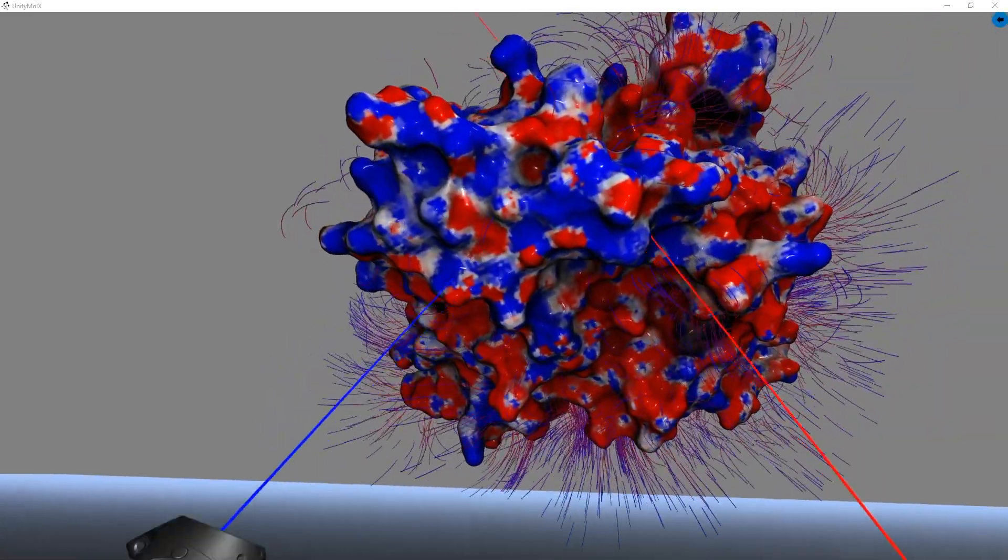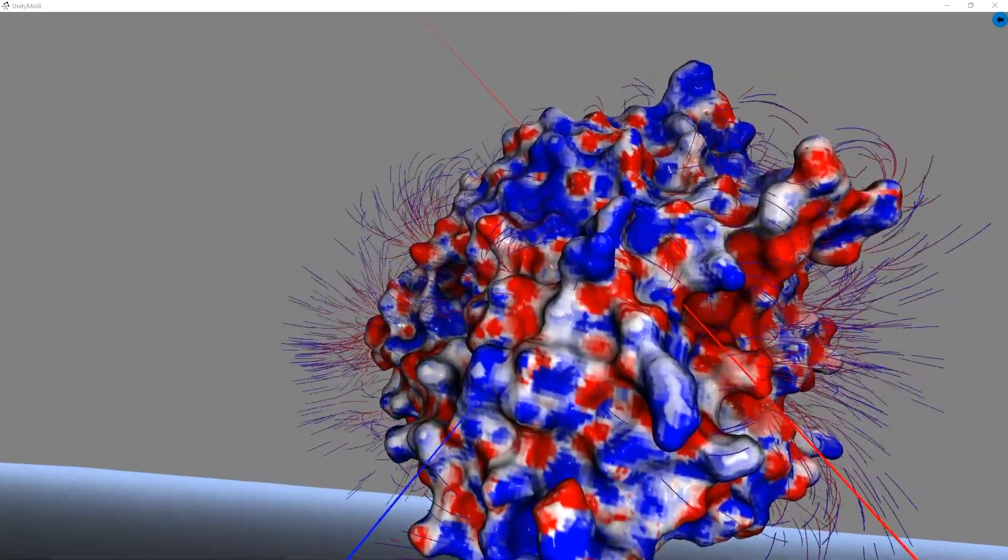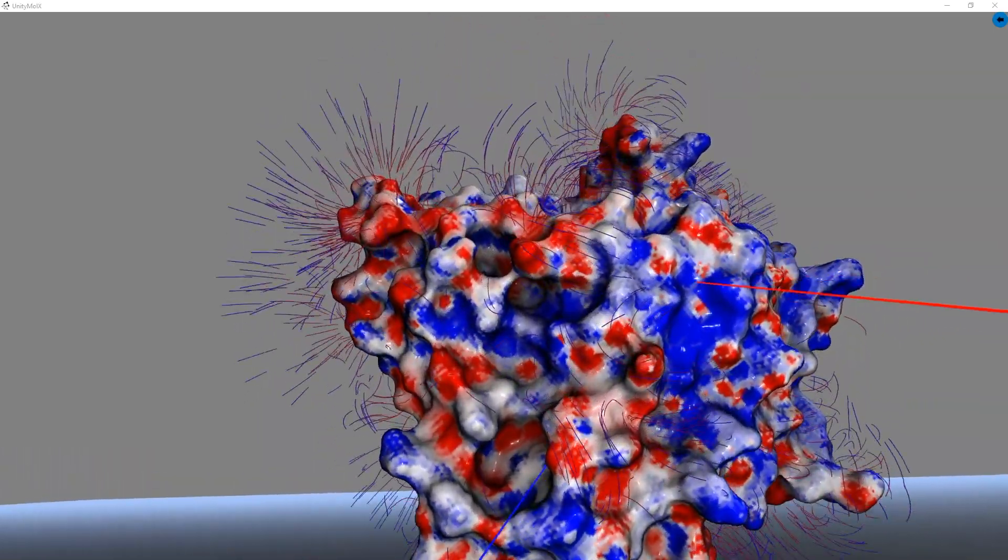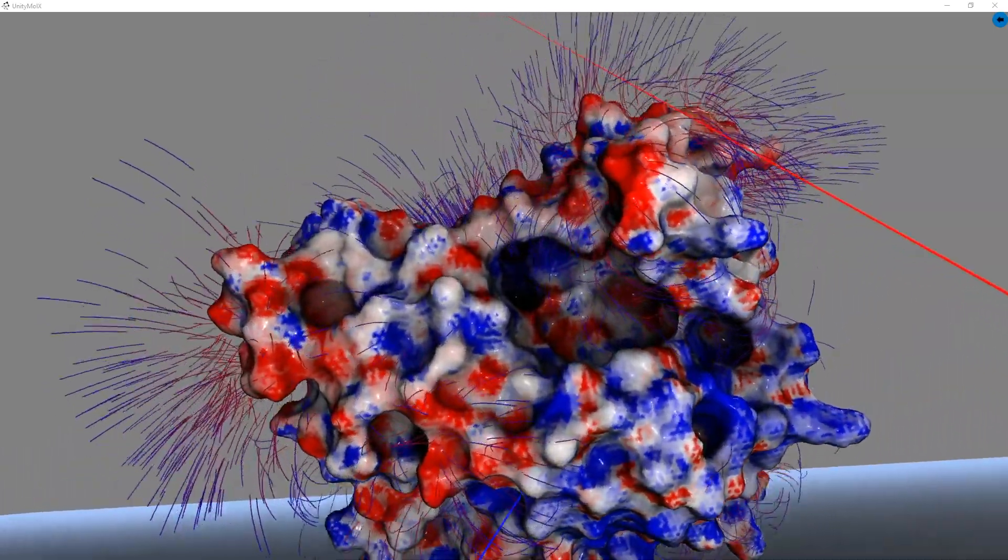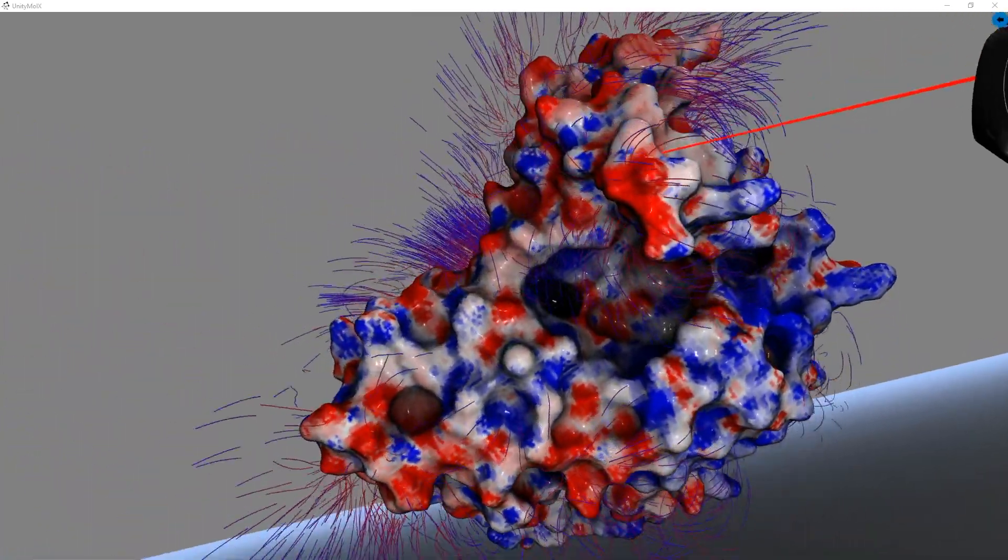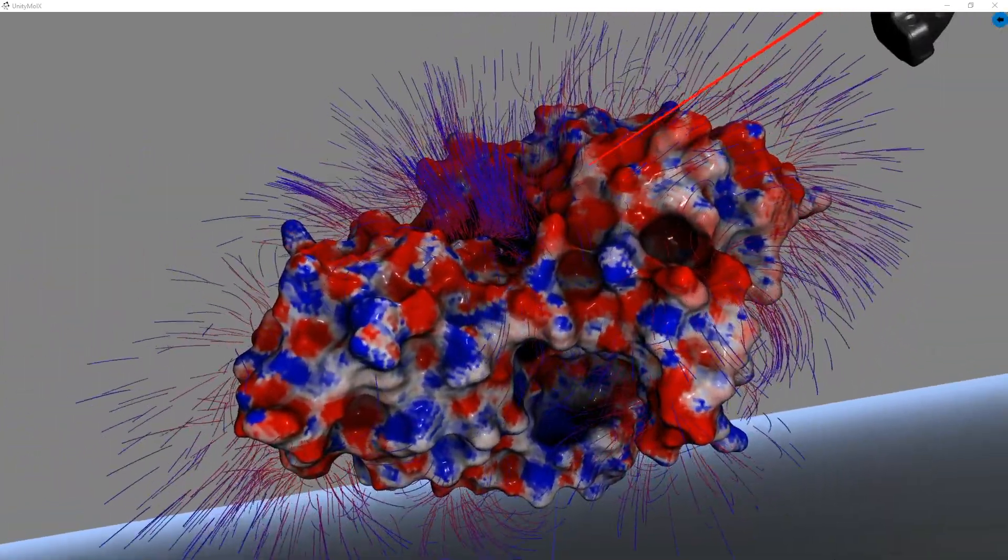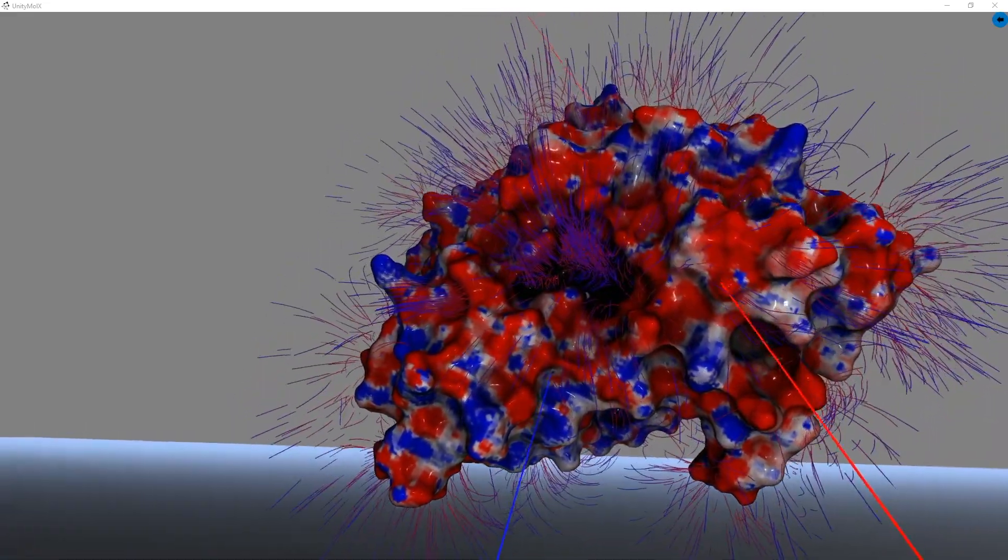We then ran that structure through PDB to PQR, where we added hydrogens and did minor optimizations. We took the resulting PQR file and ran that through APBS, where we calculated the electrostatic gradient.